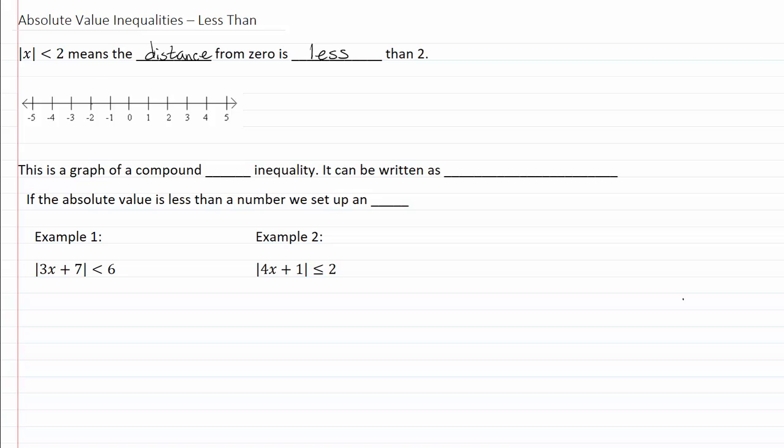Now if we have a graph right here, this graph is of a compound and inequality and it can be written as x is greater than negative two and x is less than two.